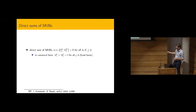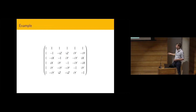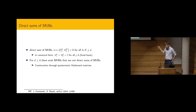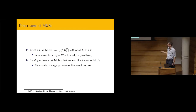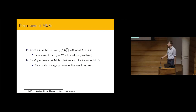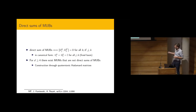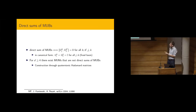If the outcome number is at least four, there exist MUMs that are not direct sums of MUBs — so they're really different. We have a systematic construction through quaternionic Hadamard matrices: you map quaternions to unitaries of dimension two, and using known results on quaternionic Hadamard matrices, we can construct these interesting MUMs in many dimensions. We can even find MUMs that cannot be mapped to MUBs by any completely positive unitary map, so they're genuinely a more general notion.